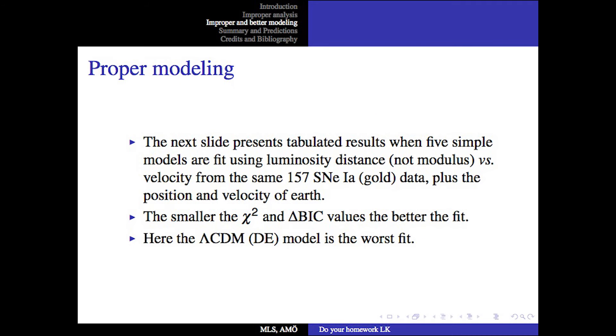The next slide presents tabulated results when five simple models are fit using luminosity distances, not the modulus, versus recession velocity from the very same 157 supernova data, plus the position and velocity of our Earth. The smaller chi-squared and the smaller delta-BIC values are the better fit. Here the lambda cold dark matter model, that is the dark energy model, is the worst fit.